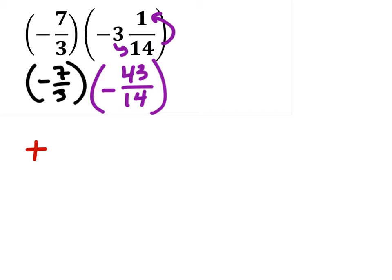And we could multiply these straight across, but here's what I'm going to recommend doing is if we look, we can see that 7 goes into 14. And the reason we can do this is because if we wrote this out, we'd have 7 times 43 over 3 times 14.